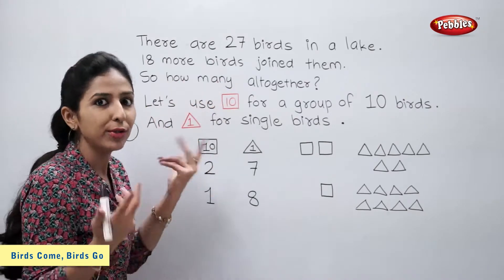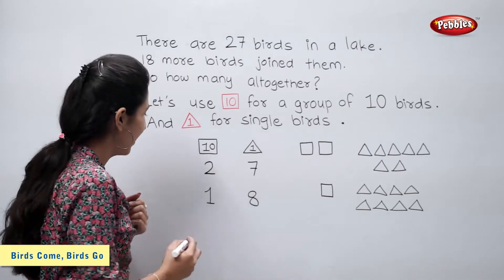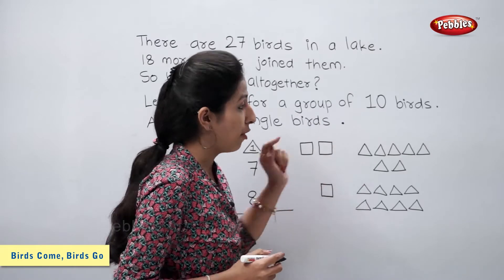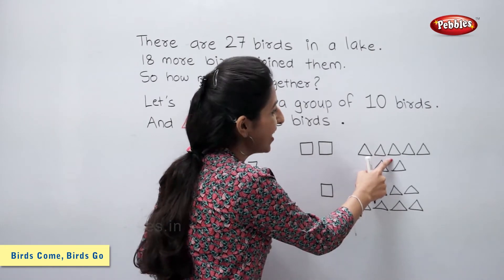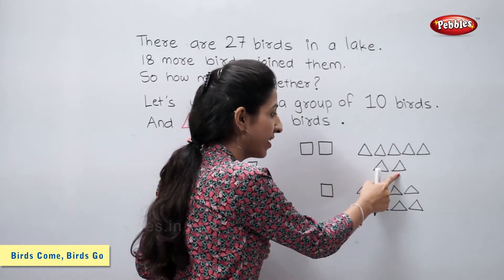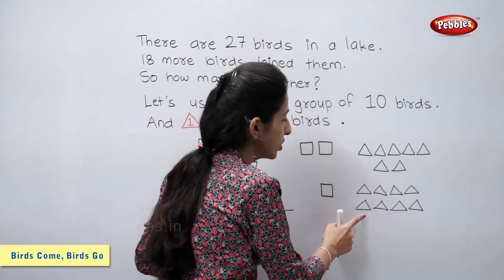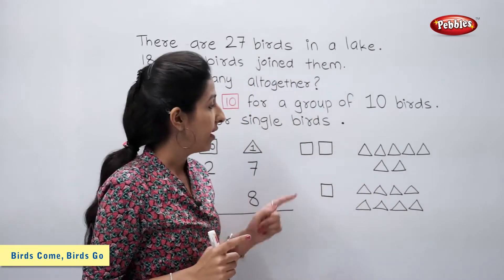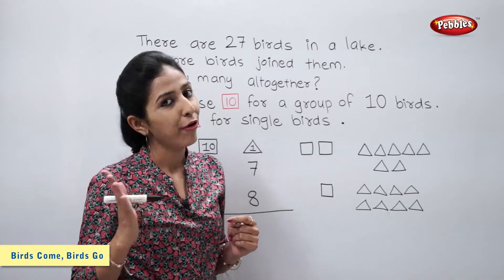So, how many birds altogether? We have to find the total number of birds, so let's add them. Let us count the number of triangles first: 1, 2, 3, 4, 5, 6, 7, 8, 9, 10, 11, 12, 13, 14, and 15. Students, there are 15 triangles in total. Now, 15 means 1 ten and 5 ones.